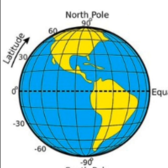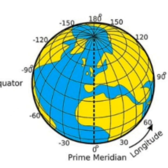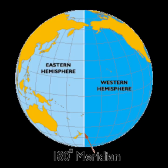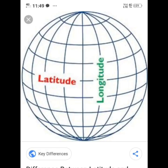We can see horizontal lines on the globe. All parallel lines from the equator up to the poles are called latitudes — these are horizontal lines. The vertical lines running from the north pole to the south pole are longitudes. The prime meridian at zero degrees longitude and the 180-degree meridian divide the Earth into the eastern hemisphere and western hemisphere.